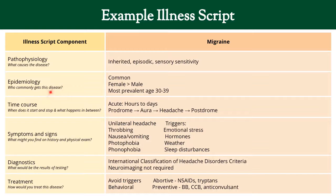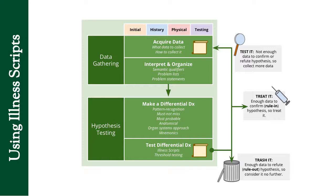Epidemiology: who commonly gets the disease? You can ask, does my patient fit this person who typically gets it? Time course: when does it start, when does it stop, and what happens in between? You will ask to see if your patient matches this time course. Signs and symptoms are things you're going to find on history and physical. Diagnostics are the results of testing, and treatment just tells us what's going on.